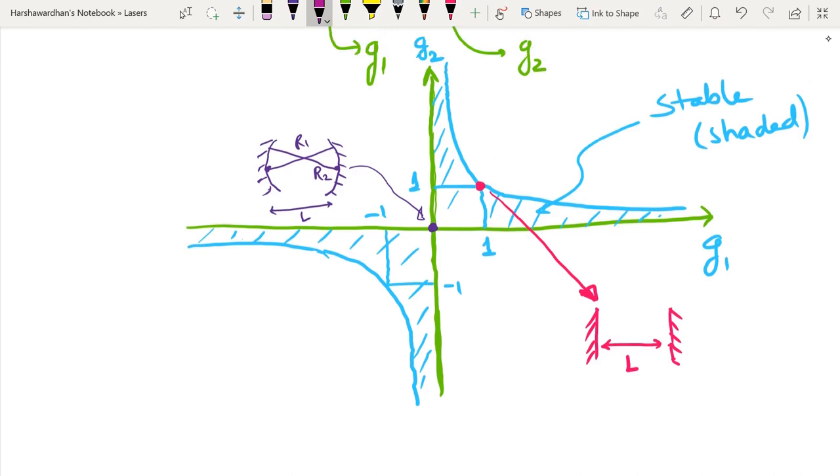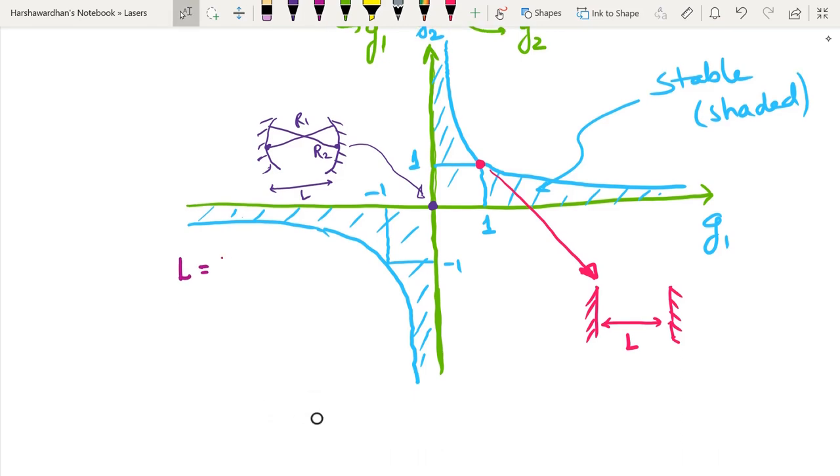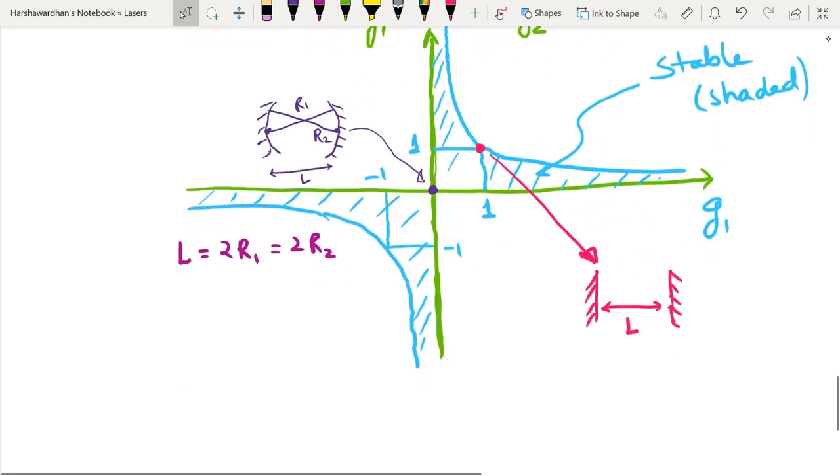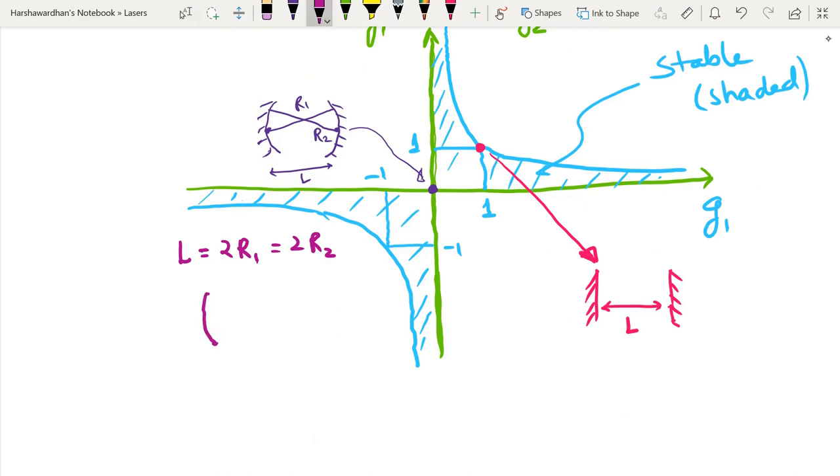So you have the third situation where if I choose my L to be such that it is 2 times R1 which is equal to 2 times R2. If I use such a possibility, that would mean that my cavity mirrors have equal radii of curvature. And the separation between them is precisely L. So essentially these two mirrors are part of a larger sphere. And you see that such a condition will basically make me land up here which again is critically stable.